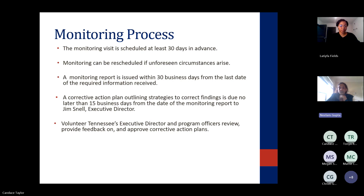The monitoring visit is scheduled at least 30 days in advance — normally I give more than 30 days. Monitoring can be rescheduled; I try to accommodate your schedule. For example, recruitment time is hard for programs. I have a deadline to issue all reports by September 30th, since the monitoring cycle runs October 1st through September 30th. The monitoring report is issued within 30 business days from the last day of the required information I receive.